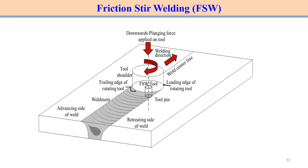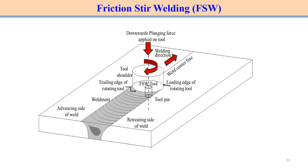In friction stir welding, a tool is inserted at the interface — the tool pin is inserted at the interface and rotates at high speed, while the tool shoulder is in contact with the surface. All contact surfaces are responsible for heat generation through friction. The tool moves along the welding direction at very low speed. The two components are joined through plasticization — both friction and the stirring action are associated with this process. That is what is called the friction stir welding process; we will discuss it in more detail later.